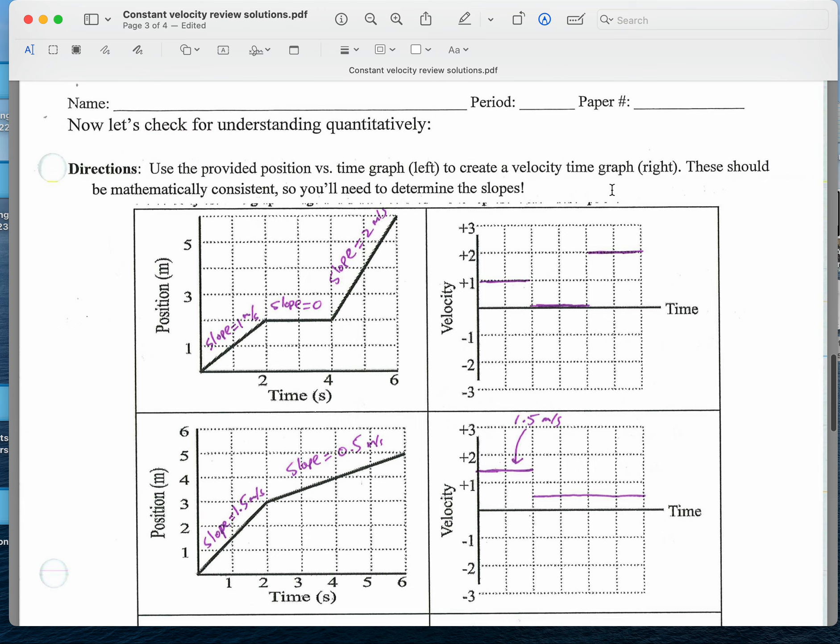The last part here is using the information to create the velocity time graph. And this was numerical. It showed up correctly on your sheet. Well, this should have had seconds on it, I guess. So I figured out the slope for each of these graphs. Slope is 1 meter per second. Slope is 0. Slope is 2 meters per second. So this is plus 1 meter per second, 0, plus 2 meters per second.